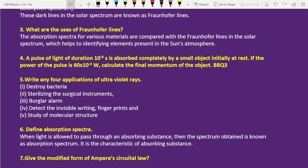A pulse of light of duration 10 power minus 6 seconds is absorbed completely by small object initially at rest. If the power of the pulse is 16 into 10 power minus 3 watts, calculate the final momentum of the object. Bookback question number 3. Fifth question, write any 4 applications of ultraviolet rays. It is important.